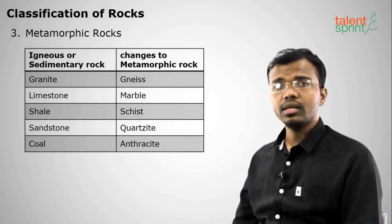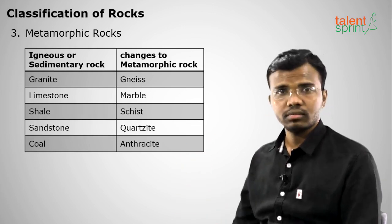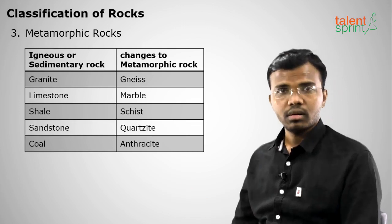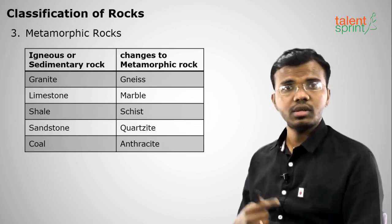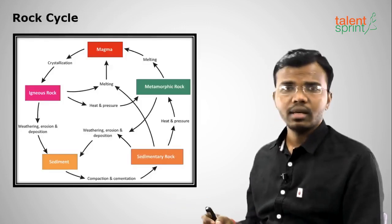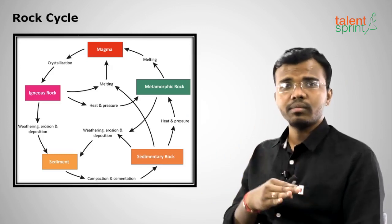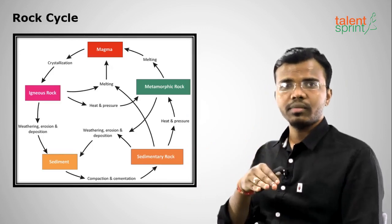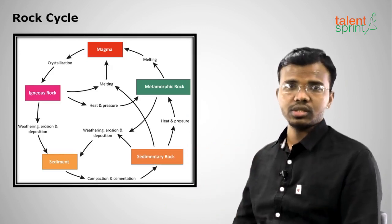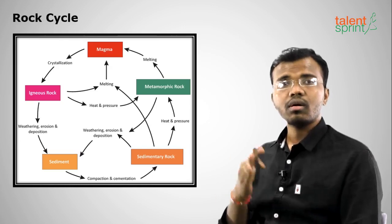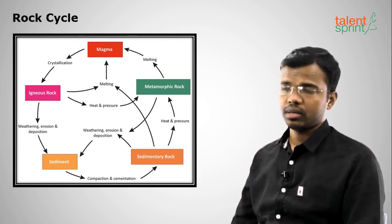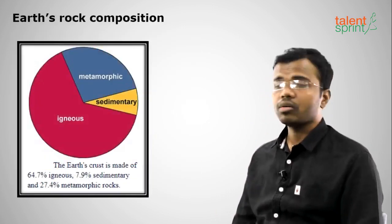To recap: granite is an example of igneous rock, marble is metamorphic, and limestone is sedimentary. The rock cycle means no rock is permanently igneous, sedimentary, or metamorphic — igneous will become sedimentary, sedimentary will become metamorphic, and metamorphic will become igneous again. This cycle keeps repeating in nature.